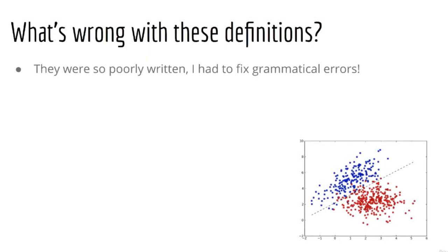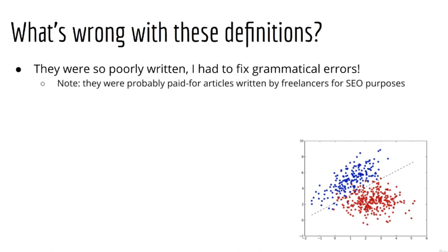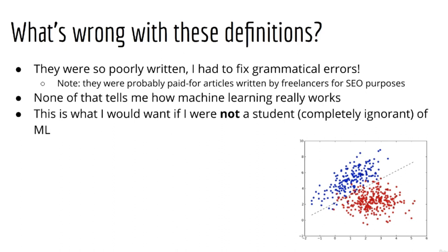In fact, these two definitions were so poorly written, I had to fix them up a little bit due to some obvious grammatical errors. None of this tells me how machine learning actually works. This is what I would expect if I were not a student of machine learning, in other words, just a layman, and I wanted to know about how someone completely ignorant of machine learning would view it at a high level. As students of machine learning, this is not really how you want to think of what we are doing. So starting now, you are no longer just a layman, you are a machine learning student.